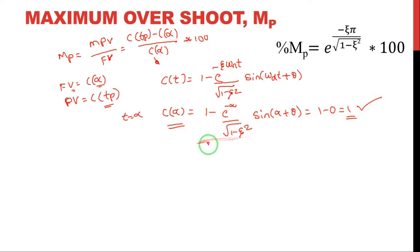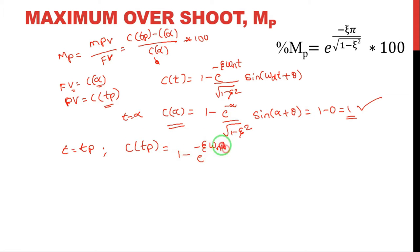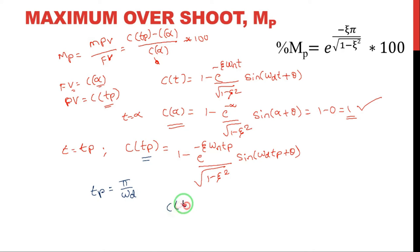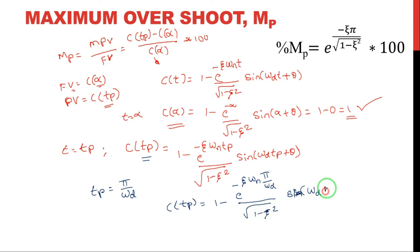Now at t equal to tp, c(tp) = 1 − e^(−ζωₙtp) / √(1−ζ²) · sin(ωdtp + θ). We already derived the formula for peak time in the previous class: tp = π/ωd. Substituting π/ωd in place of tp gives c(tp) = 1 − e^(−ζωₙ·π/ωd) / √(1−ζ²) · sin(ωd·π/ωd + θ).